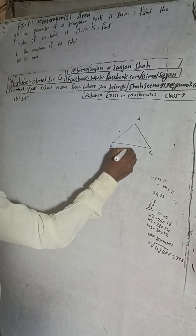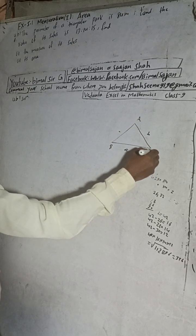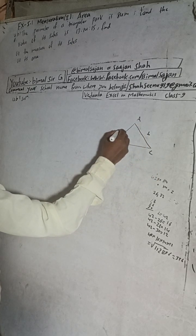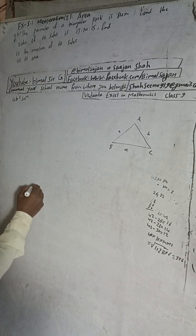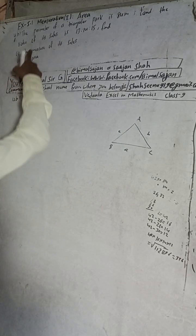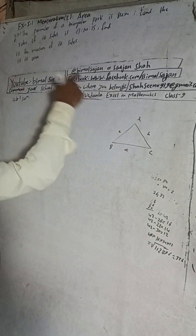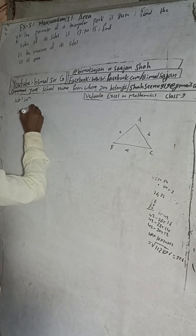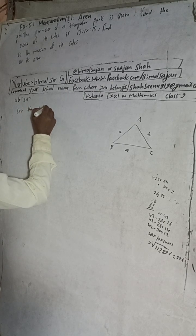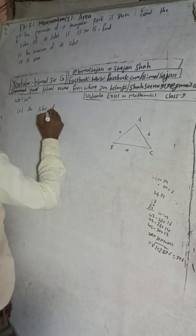Suppose this here is a triangle — a triangular park. This side is small a, this is capital B, this side is small b, and this is small c. So altogether you have sides a, b, and c. We are given the perimeter and also given the ratio of the sides a:b:c.